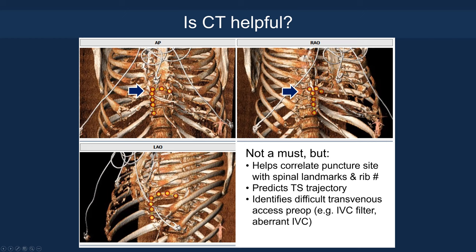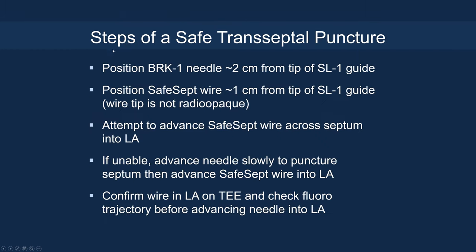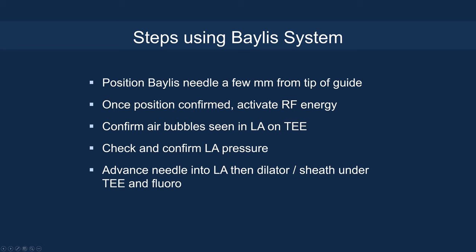Steps of safe transeptal puncture: position the BRK-1 needle two centimeters from the tip of the SL1 guide. For mechanical puncture, position the SafeSept wire one centimeter from the tip — note the wire tip is not radiopaque. Attempt to advance the SafeSept wire across the septum; if unable, advance the needle slowly to puncture, then advance the wire. Confirm the wire in the left atrium on TEE and fluoroscopic trajectory before advancing into the LA. For the Baylis RF system, position the needle a few millimeters from the tip, activate RF energy once confirmed, look for air turbulence on TEE, and confirm left atrial pressure before advancing.